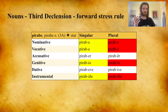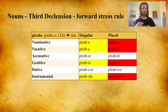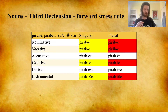Here I have marked the stressed syllable with an acute accent. So the nominative singular Pirabe, the plural Pirabe; the genitive singular Pirabio, genitive plural Pirabio; the instrumental singular Pirabide, the instrumental plural Pirabide.